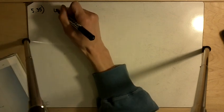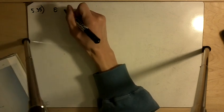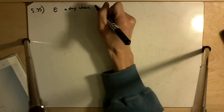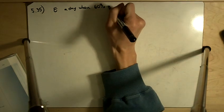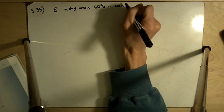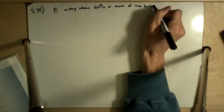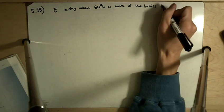So we want to know, event E is a day when 60% or more of the babies born were boys.